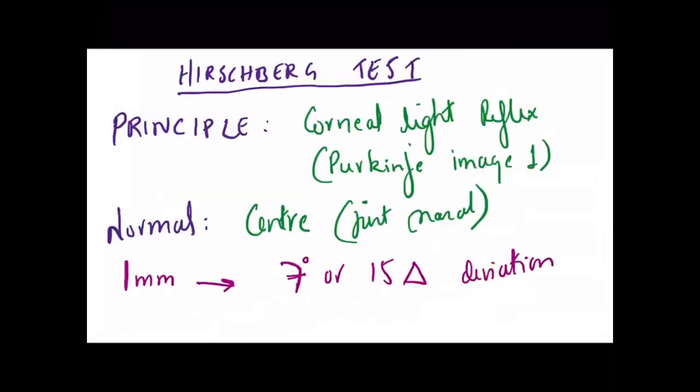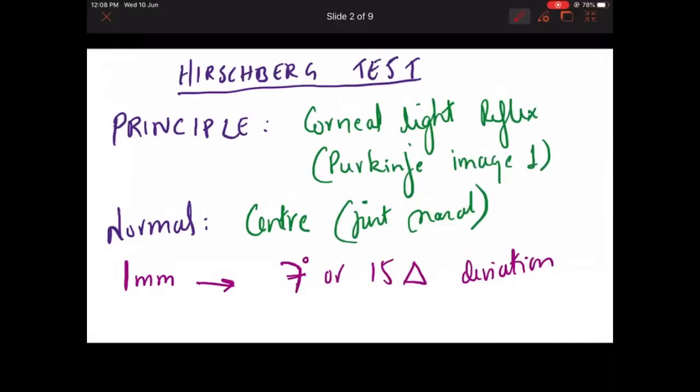First we will see what is Hirschberg's test. Hirschberg's test is nothing but a test based on the corneal light reflex. When you shine a torch on the cornea, the light reflex which is formed on the cornea is called Purkinje's first image. Based on this, the first test is done. We will see what Purkinje's images are.